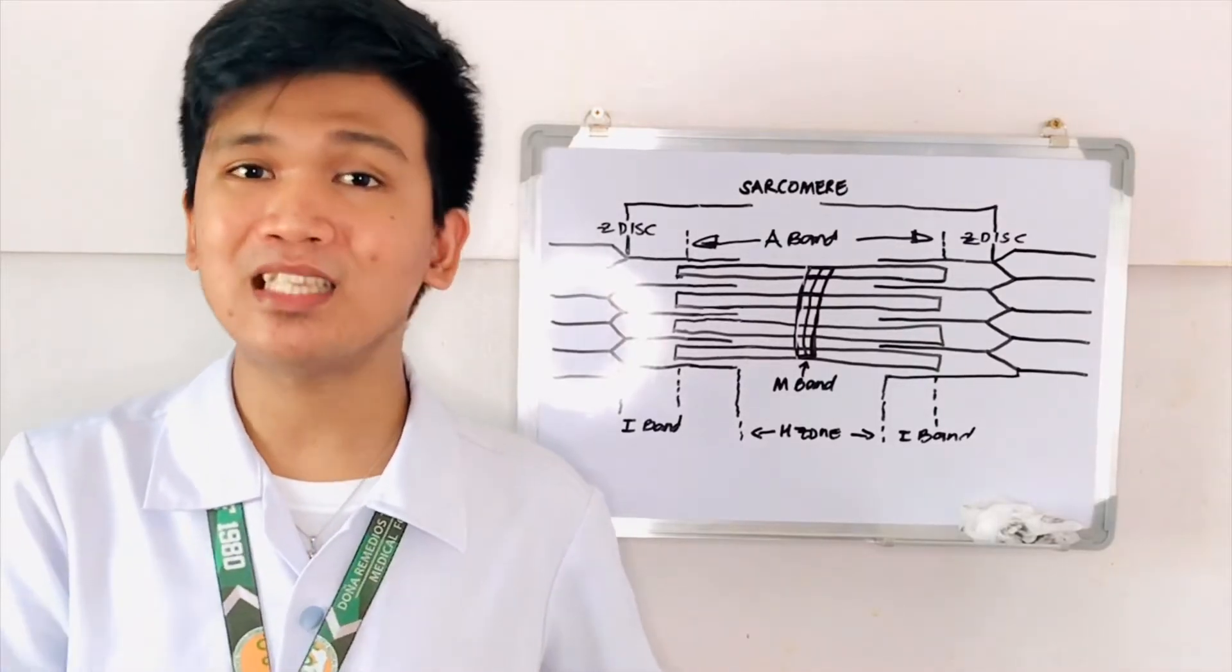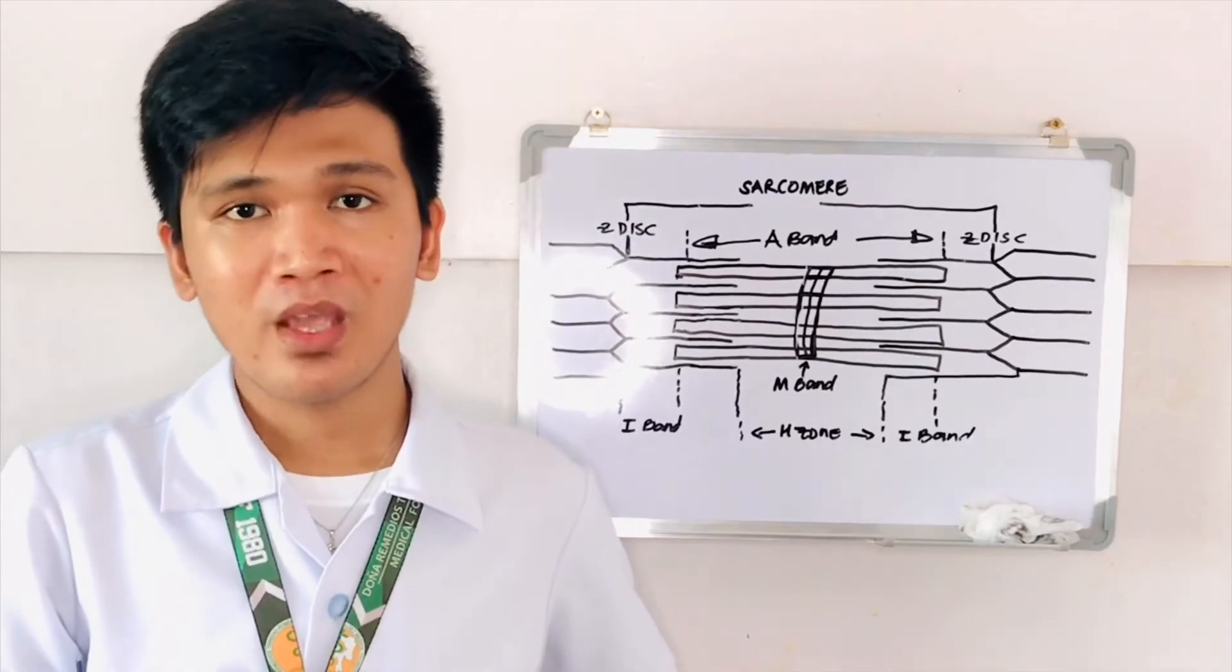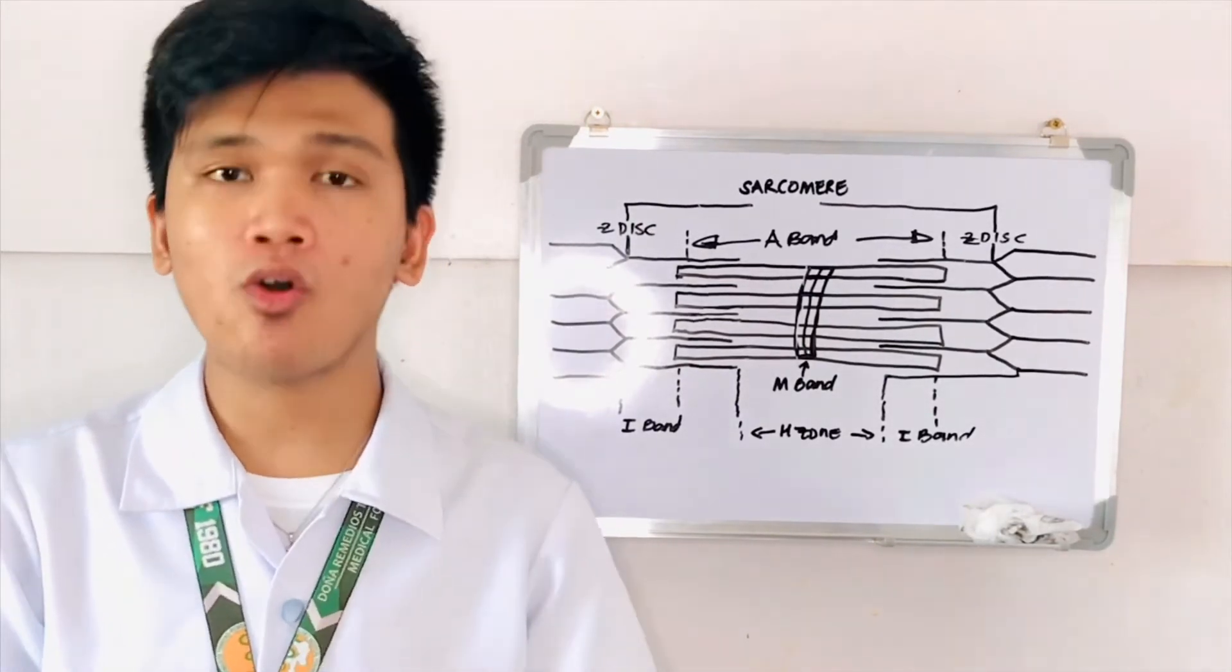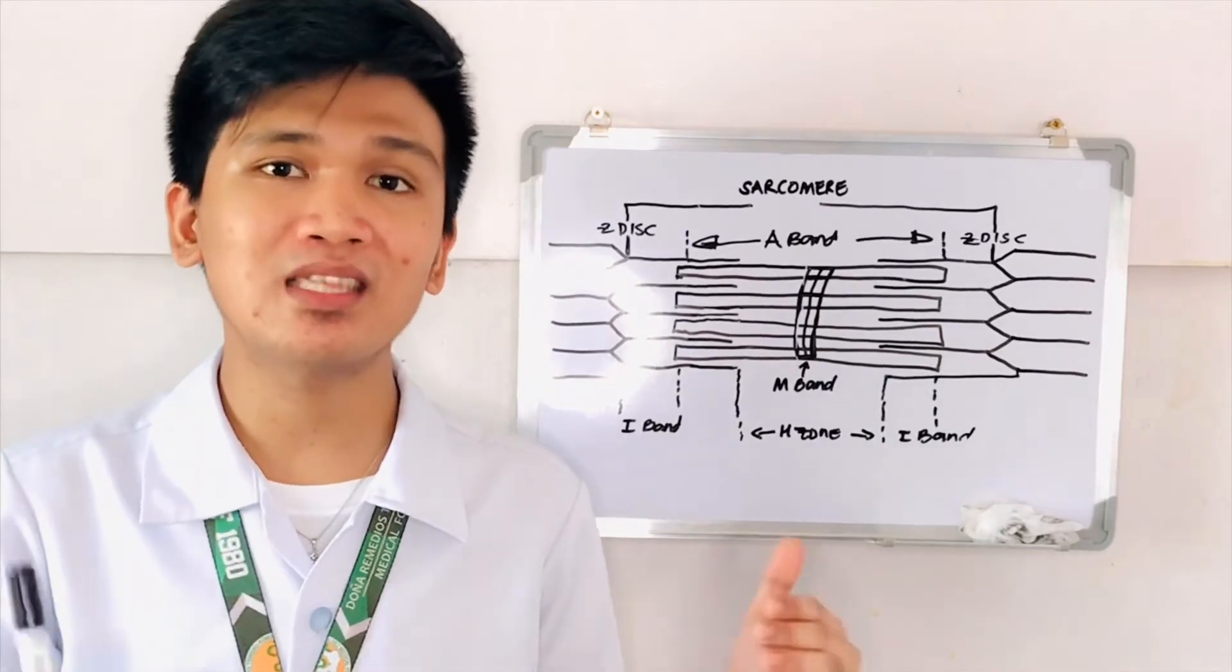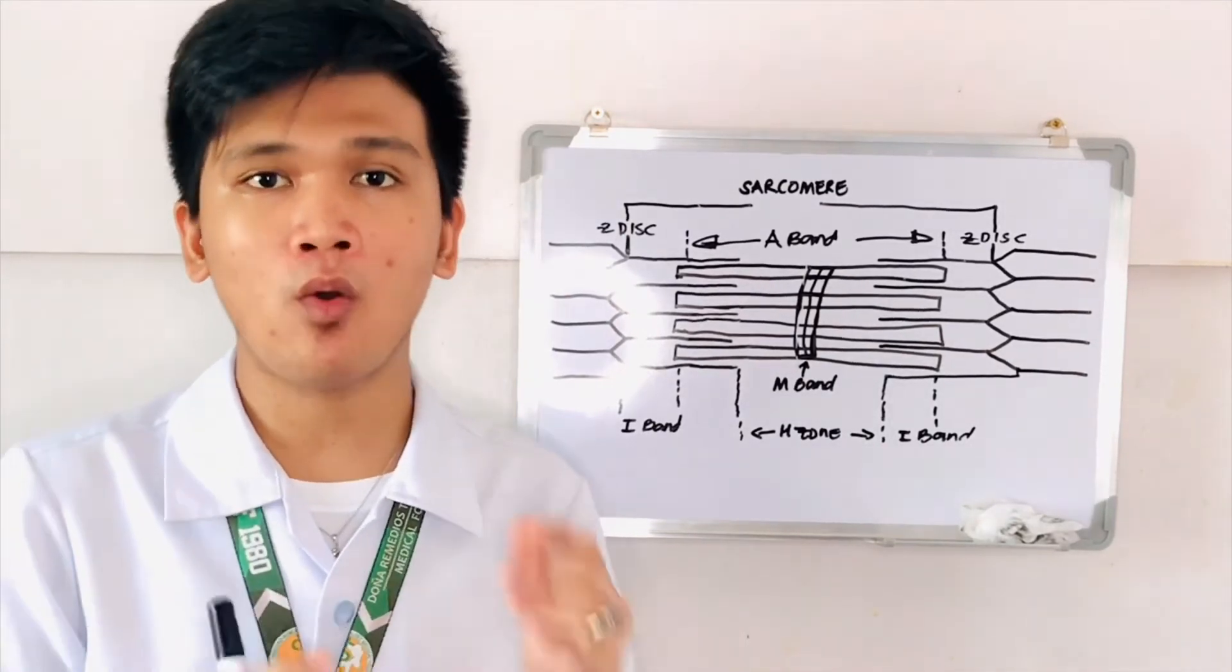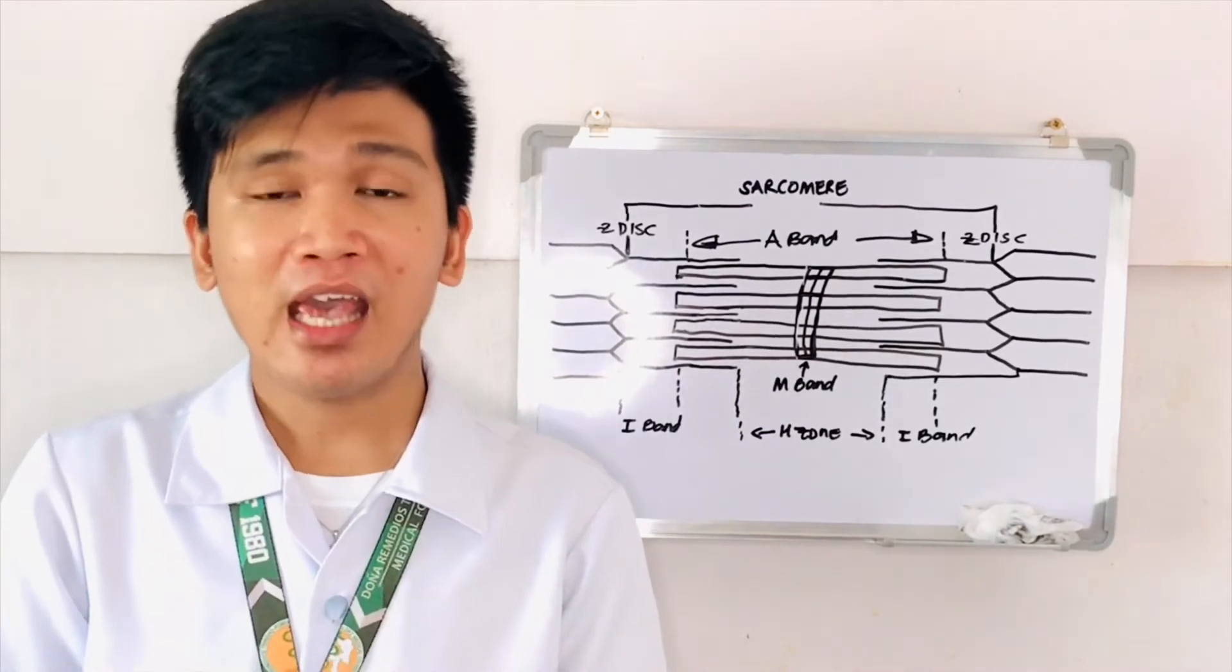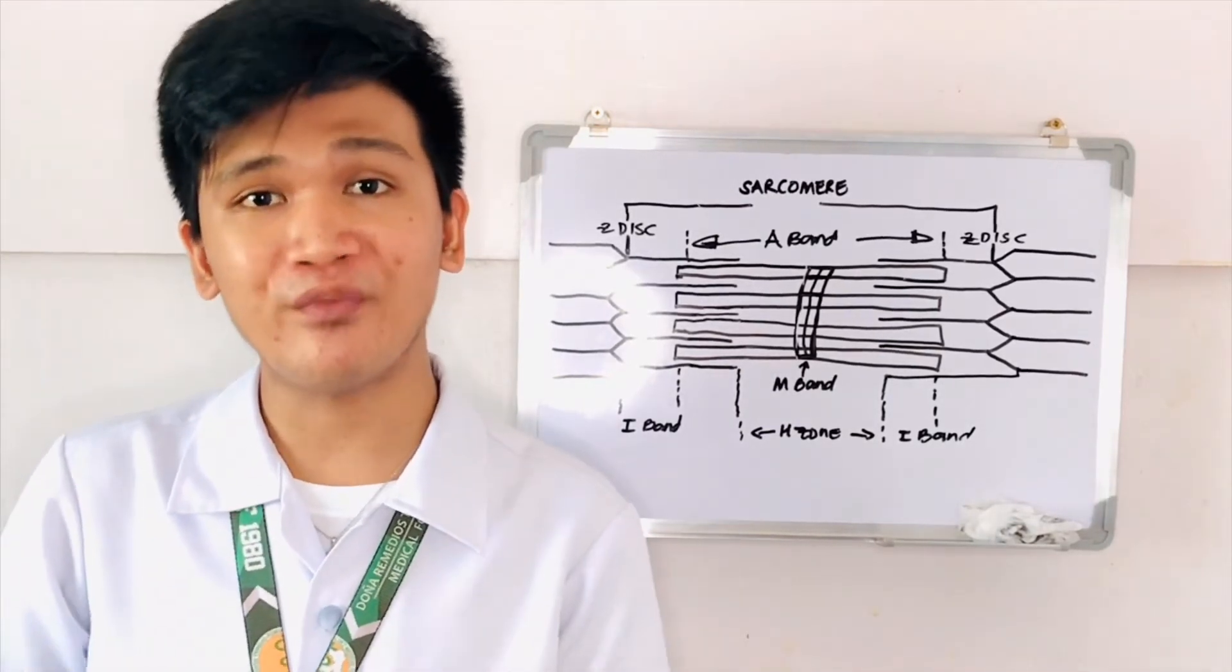Then, it's the sliding filament theory. It's the sliding of thin myofilament of protein or the actin towards the thick myofilament of protein or the myosin that generates tension and results to the shortening of muscle fiber.